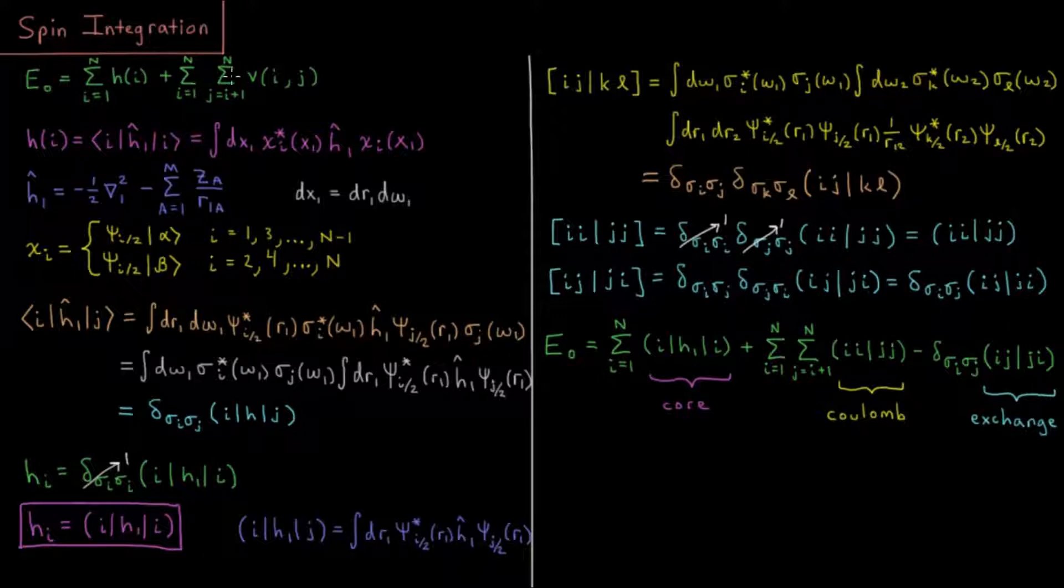Plus a pairwise sum over all pairs of electrons, i equals 1 to n, j equals i plus 1 to n, of the interaction energy, or the pair energy of those two electrons.